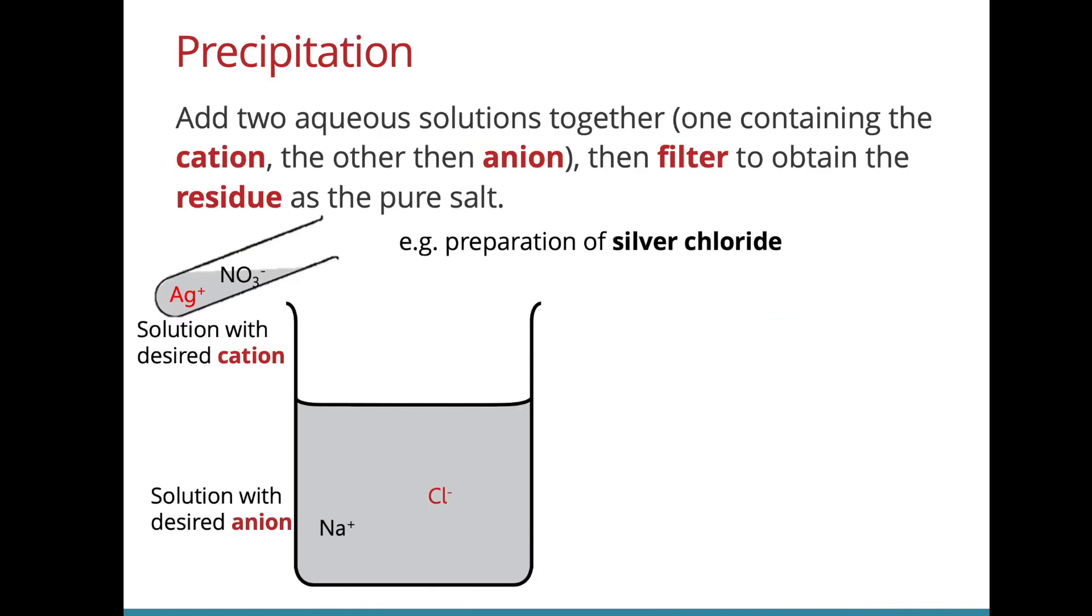Let's say we wanted to prepare the insoluble salt silver chloride. Precipitation involves mixing two aqueous solutions, one containing the cation and one containing the anion that you want. So the moment you mix both of them together, they will meet, the ions will start colliding, and the silver ions will start being attracted to the chloride ions and they will form a precipitate. This precipitate settles and it can be filtered by filtration.